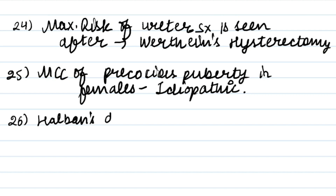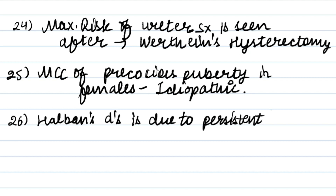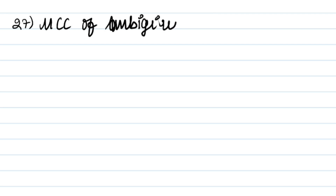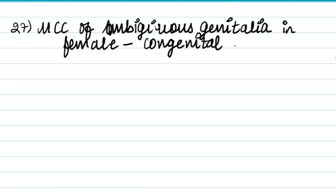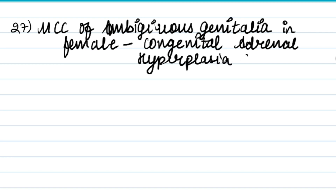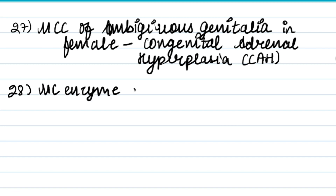Halban's disease is due to a persistent corpus luteum. The most common cause of ambiguous genitalia in females is congenital adrenal hyperplasia (CAH). The most common enzyme deficiency in congenital adrenal hyperplasia is 21-hydroxylase deficiency.